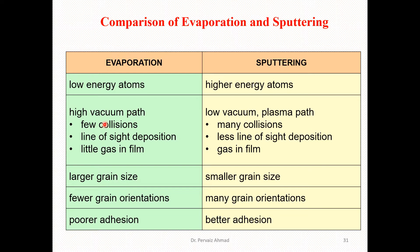In evaporation we have a high vacuum environment, which means we have few collisions and line-of-sight deposition. There is very little possibility of impurity gases being incorporated in the deposited thin film. In sputtering, however, it operates under low vacuum with a plasma. Unlike evaporation, we have many collisions in sputtering, less line-of-sight deposition, and impurity gases can be incorporated in the deposited thin film.